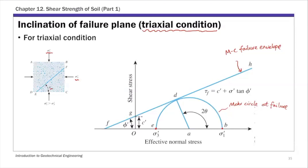For this triaxial condition, we know that the pole is located at a specific point on the Mohr circle — as shown in example two from the previous lecture. If you connect the pole to any point on the Mohr circle, that line is parallel to the corresponding plane. For the failure plane, we use the tangent point — the point where the failure envelope touches the Mohr circle — which is the failure point.